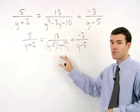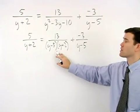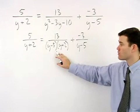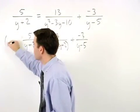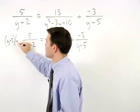You can see that our common denominator is y minus 5 times y plus 2. So we multiply both sides of the equation by this common denominator.